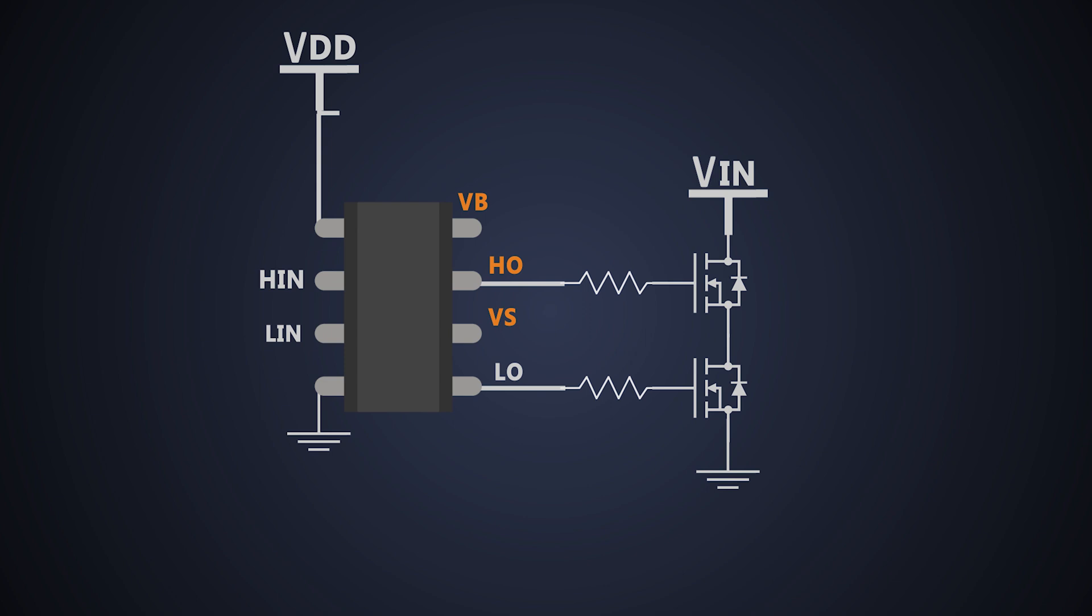There are 3 more important components being used in this circuit, which are a bootstrap capacitor, a bootstrap diode and a bootstrap resistor, which are connected like this in the driving circuit.